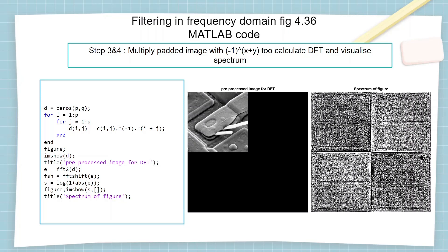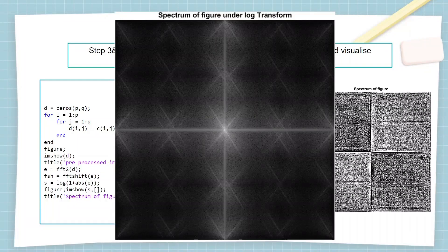Then we apply the forward Fourier transform to obtain the frequency domain representation in step 4. We can visualize the spectrum of the image in the frequency domain. Since the spectrum doesn't contain much visible information as-is, we apply a log transform to the spectrum for better visualization, because frequencies in an image may range from very small values to very high values around hundreds of kilohertz, and a logarithmic scale is needed to visualize this huge range over a small area.